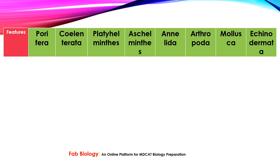The phyla we will cover are invertebrates. The total eight phyla are: first, Porifera; second, Coelenterata; third, Platyhelminthes; fourth, Aschelminthes; fifth, Annelida; then Arthropoda; seventh is Mollusca; and eighth is Echinodermata. So they give eight phyla.